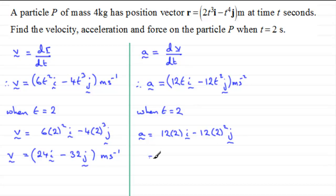Working that out gives us 24 in the i direction minus 12 times 4, which is 48, in the j direction. And we'll put that in brackets, and that's measured in meters per second per second.